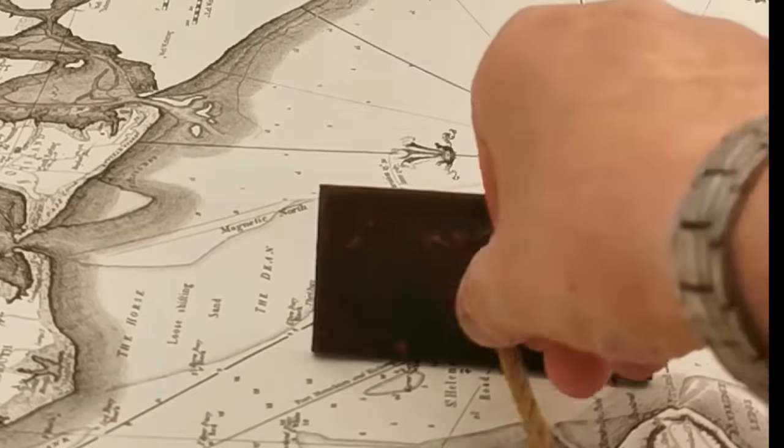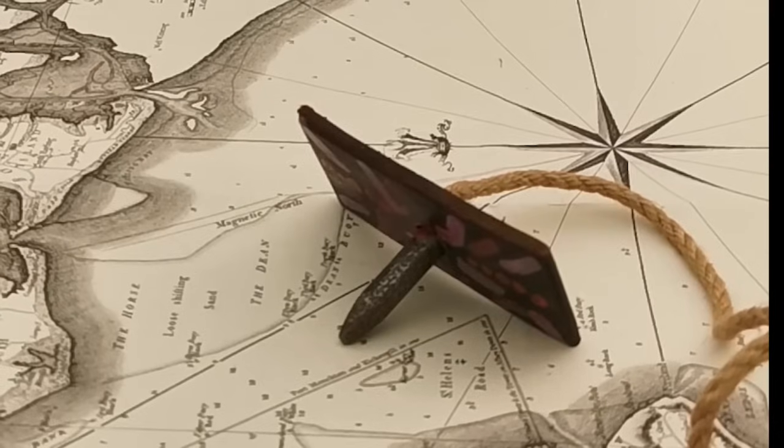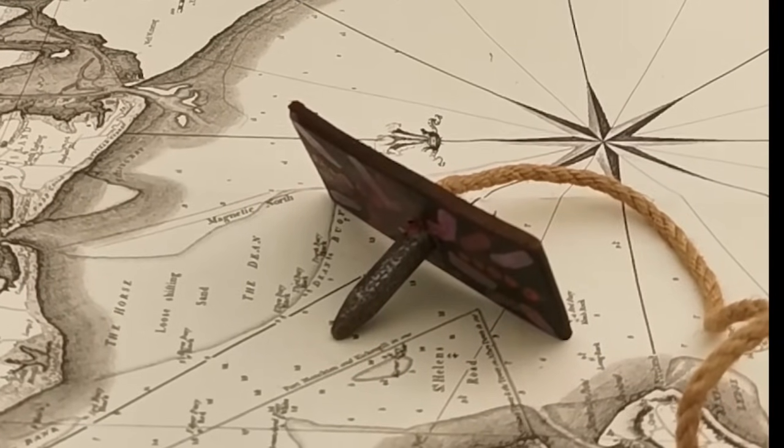This is the Kamal, believed to be used in Arabia between the 6th and the 8th century. It measures latitude, the angle of the sun above the horizon.